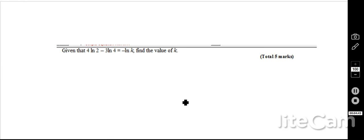Third question, given that 4 ln 2 minus 3 ln 4 equals minus ln k, find the value of k. This is basically just testing that we can rearrange logs. So let's rearrange, we've got 4 ln 2 here, and we've got minus 3 ln, and let's write that as 2 to the power of 2, because obviously 4 is the same as 2 to the power of 2 equals minus ln k.